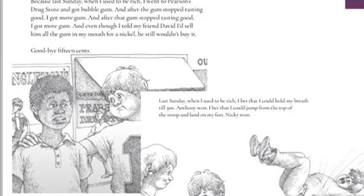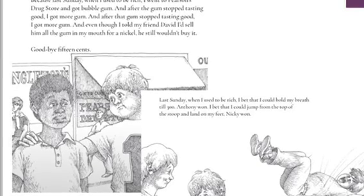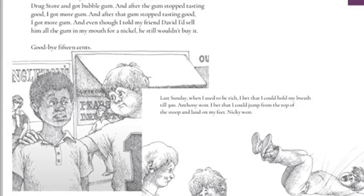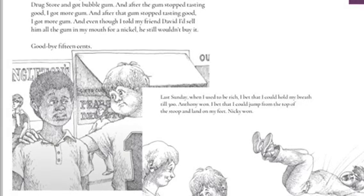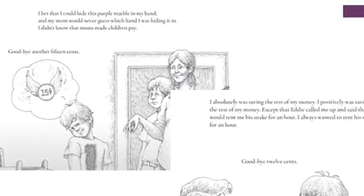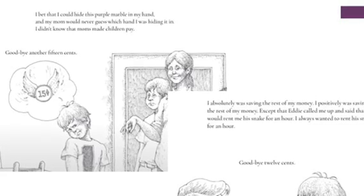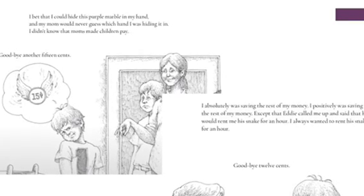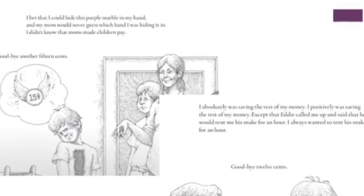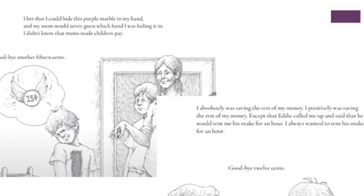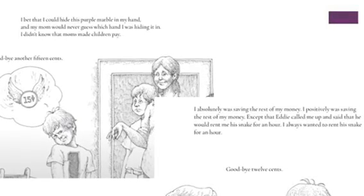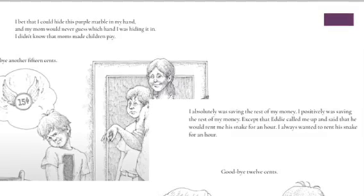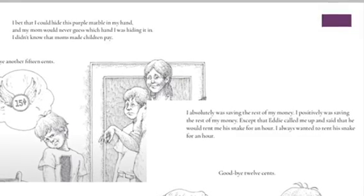Last Sunday, when I used to be rich, I bet that I could hold my breath to 300 — Anthony won. I bet that I could jump from the top of the stoop and land on my feet — Nicky won. Is Alexander making the right choices? I bet that I could hide this purple marble in my hand and my mom would never guess which hand I was hiding it in. I didn't know that moms made children pay. Goodbye, another 15 cents. I absolutely was saving my money — except that Eddie called me up and said that he would rent his snake for an hour. I always wanted to rent his snake for an hour. Alexander sure is making some choices. Do you think they're the right choices?